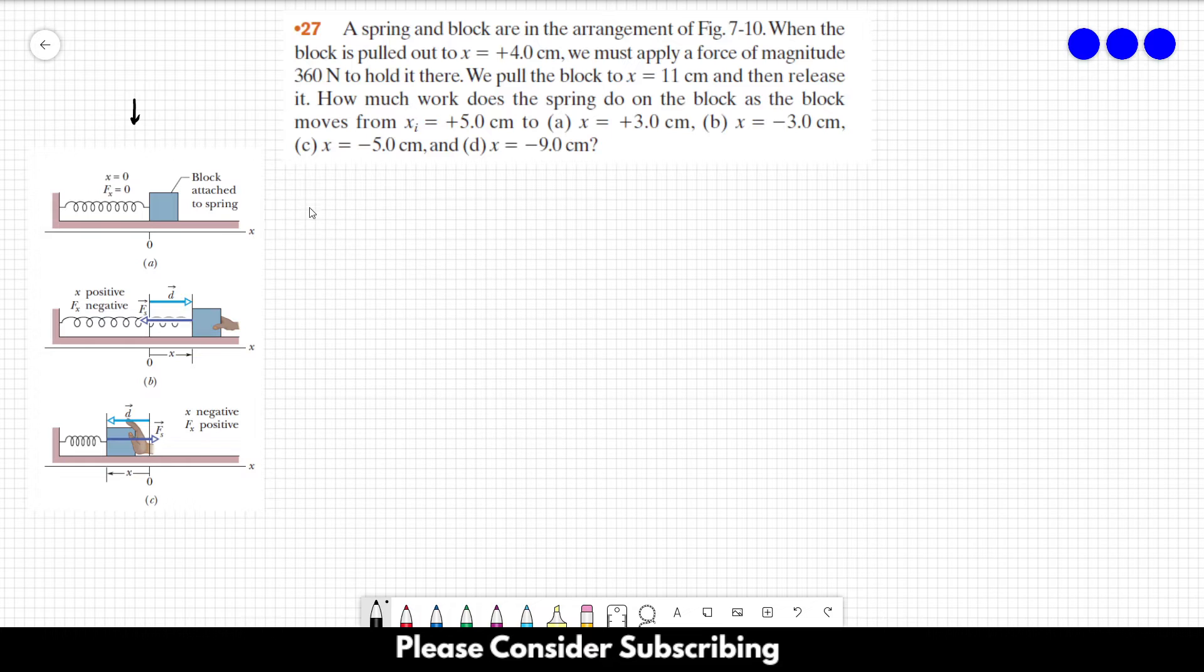The first thing we need to do is calculate the spring constant k using Hooke's law. So F = -k·Δx. However, the problem only gives us the magnitude of the force. We don't know if it's positive or negative, so we'll apply the magnitude to everything. Since k is always positive, that won't change our answer.